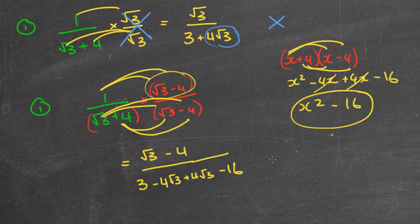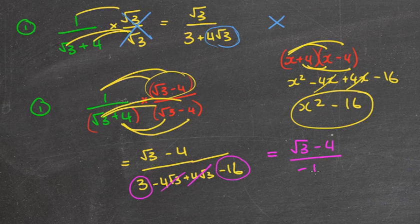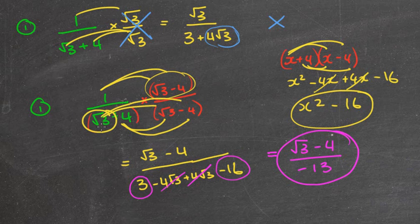Once I've done that I can clean up and simplify. Root three minus four doesn't simplify. Negative four root three plus four root three cancels out, leaving three minus 16 which is negative 13. I now have a rational number on the denominator - it's negative, but it's still rational. A lot of people who know difference of two squares quickly will just say root three squared is three and four squared is 16, giving three minus 16 equals minus 13. You can actually skip expanding those two middle terms if you know the difference of two squares shortcut.